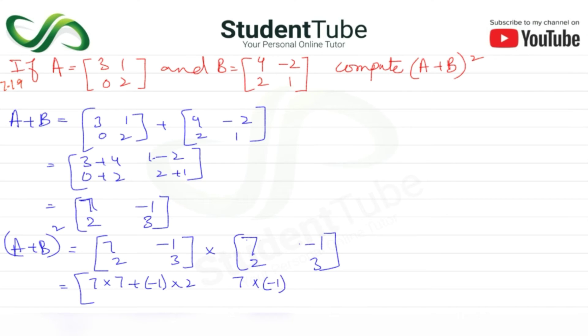minus 1 multiply by 3. Then 2 multiply by 7 plus 3 multiply by 2. Then 2 multiply by minus 1 plus 2 multiply by 3.